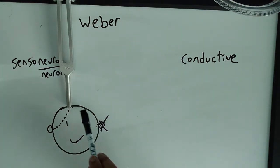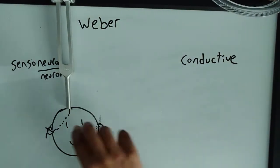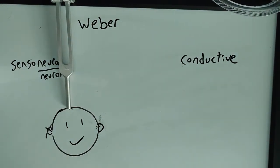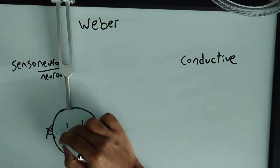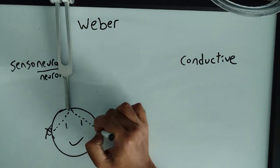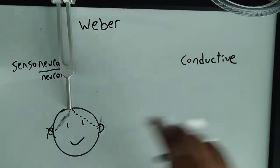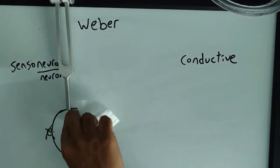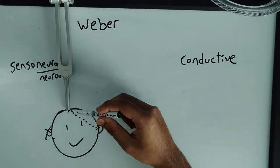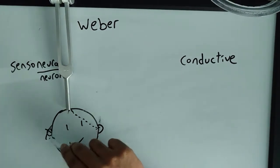If a person comes in with right-sided hearing loss and you do the Weber test — there's right-sided hearing loss, so there's no functional neuron going to the right ear. When you do the Weber test, the patient will say they feel it on the left ear, the good ear. They don't feel anything on the right ear because there's no neuron.